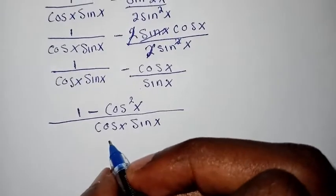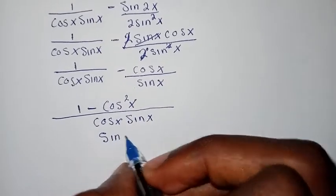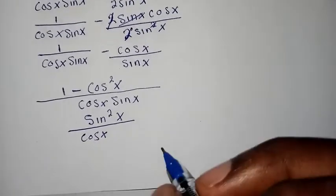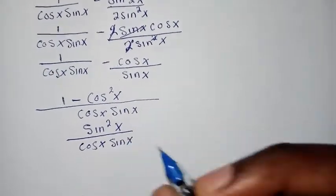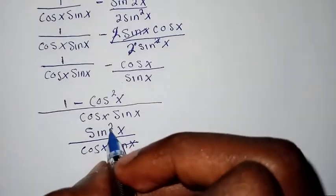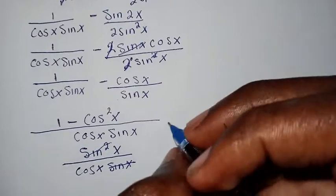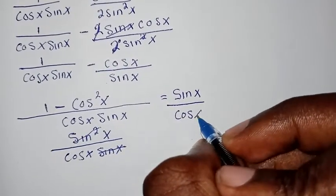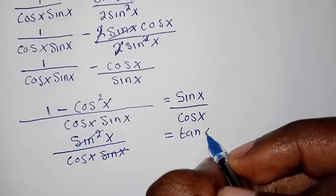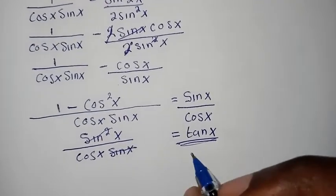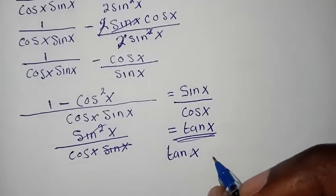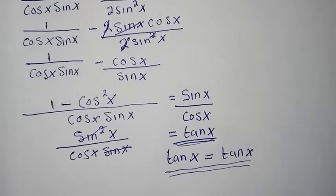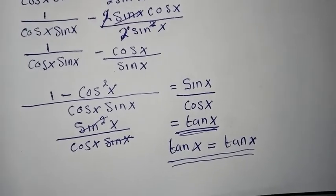We can now cancel one sine x from the numerator sine squared x with the sine x in the denominator, leaving sine x over cosine x, which equals tan x. Therefore, tan x on the left hand side is equal to tan x on the right hand side. Hence shown. That's just how easy this question is — thank you so much.